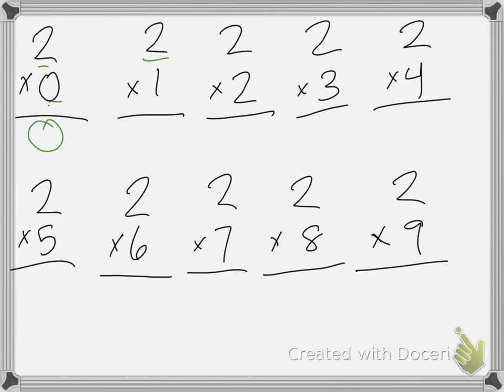1 group of 2 would be 2 pennies. 2 times 2 is 4, 2 times 3 is 6, 2 times 4 is 8, 2 times 5 is 10, 2 times 6 is 12, 2 times 7 is 14, 2 times 8 is 16, 2 times 9 is 18.